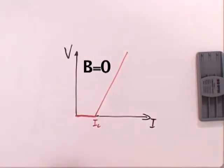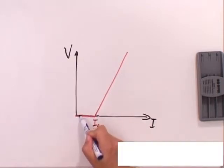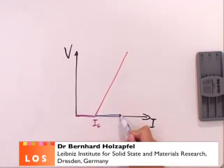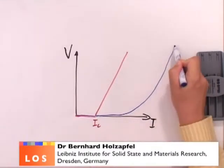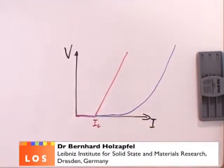The IV curve of the grain itself, of the YBCO grain itself, behaves completely different. You have also zero voltages up to IC, but you observe a power law behavior with increasing current.